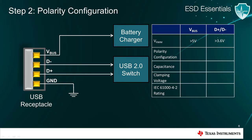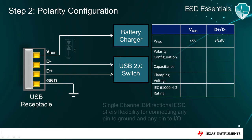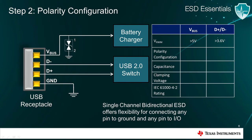Next, we need to decide what ESD polarity configuration we would prefer. In this application, both the unidirectional and bidirectional diodes would be suitable since the VBUS and D+ and D- voltages will always be greater than or equal to 0 during normal operation. While unidirectional diodes would provide better negative clamping here, single-channel bidirectional ESD diodes would offer the flexibility of connecting any pin to ground and the other pin to I/O since it is symmetrical. The same would apply to D+ and D-.